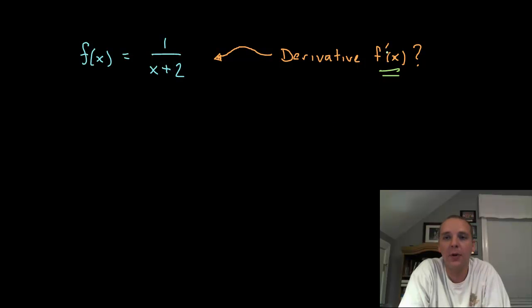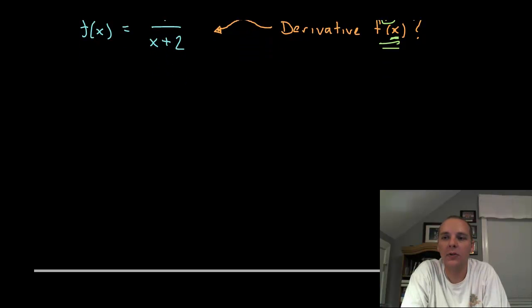Now first of all, what is f prime of x, what is the derivative? Well it's a new function designated by this prime notation. It's a new function that will tell you the slope of this function at any given x value. So if you were to plug in an x value into f prime, let's pick a number like 5, it will tell you the slope of 1 over x plus 2 at 5.